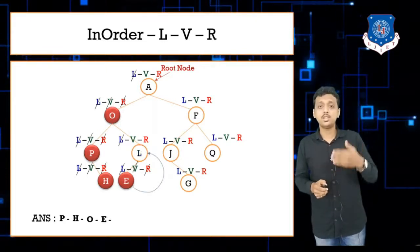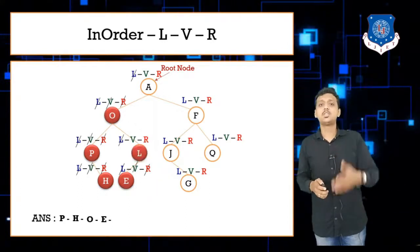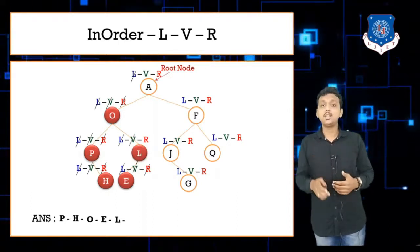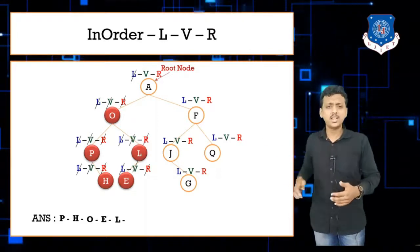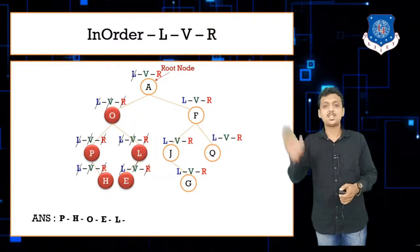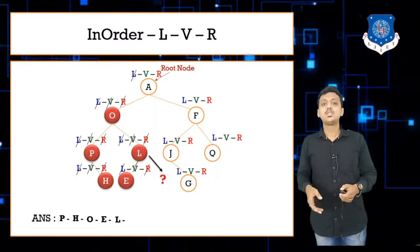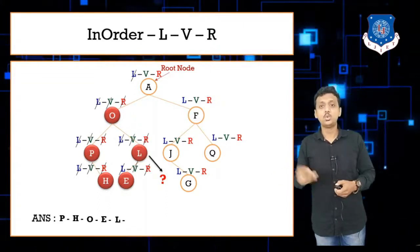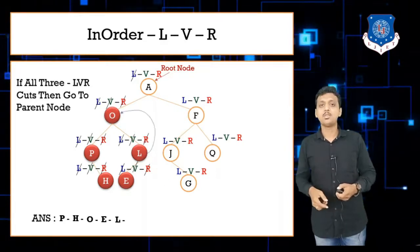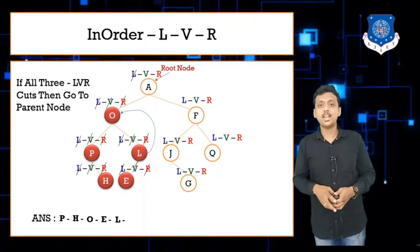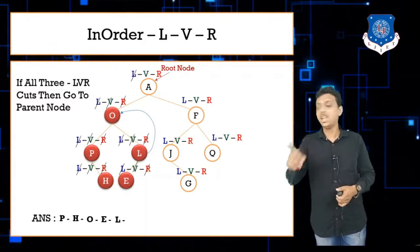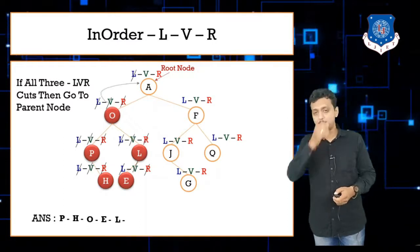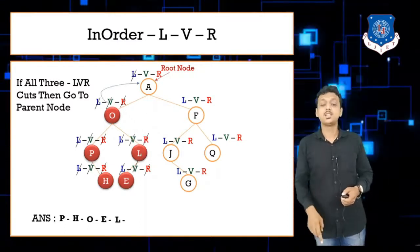The next remaining operation on L is visit. Visit L, write down L in the answer, then move to R. Is there any node on the right side of L? No. Just cut down R. Now all three operations L, V, and R are performed on L — move towards the parent node again. Back at O — check carefully: L, V, and R all three performed. Yes. Then move towards the parent node of O, which is our root node A.